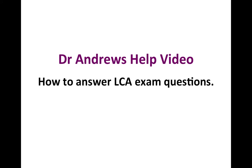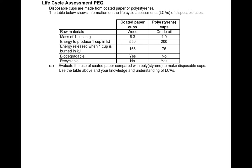Hello everyone, Dr. Andrews here with another help video on how to answer life cycle assessment exam questions. Here is a classic example of a life cycle assessment exam question where it's given you lots of information about two different types of disposable cups — one made from coated paper and one from polystyrene. The question is asking you to evaluate the use of coated paper compared with polystyrene to make disposable cups, using information from the table and your own knowledge and understanding of life cycle assessment.